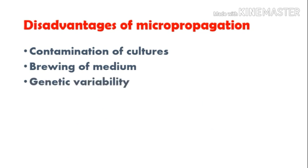The third disadvantage is genetic variability. When micropropagation is carried out through shoot tip cultures, genetic variability is very low. However, use of adventitious shoots is often associated with pronounced genetic variability.